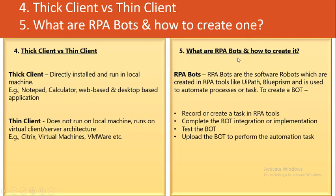Question five: what are RPA bots and how do you create them? RPA bots are software robots created in RPA tools like UiPath, Blue Prism, or Automation Anywhere, and they are used to automate processes or tasks. To create a bot, you either record or create the task in the RPA tool, complete the bot integration or implementation, then test the bot. If it works as per the requirement, you upload it to production to perform the automation task.